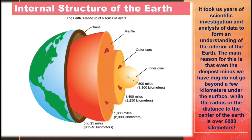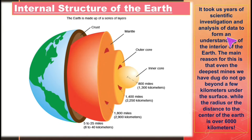Here we are going to have an idea about the structure of the earth. The outermost layer is known as crust, inside that mantle is there, then outer core and then inner core. It took us years of scientific investigation and analysis of data to form an understanding of the interior of the earth.